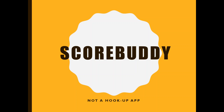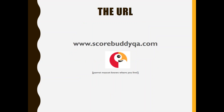Now we're going to get into ScoreBuddy — yay ScoreBuddy, and there's a ScoreBuddy parrot. The URL for ScoreBuddy is www.scorebuddyqa.com. This is actually already up on the staff page too, so you don't really have to remember it. If you go to your internal applications, you have ScoreBuddy right there. Everyone has accounts set up.